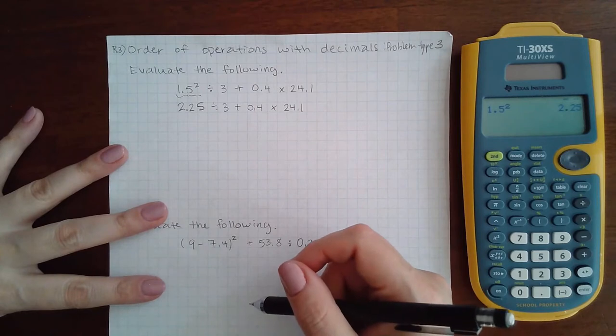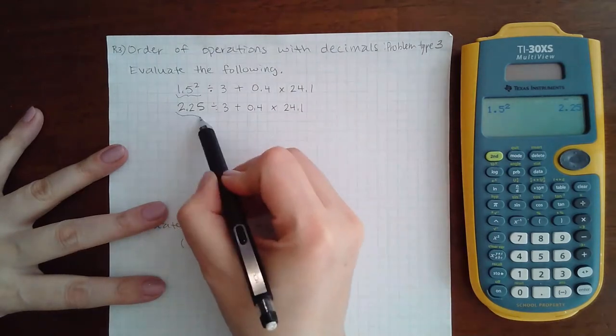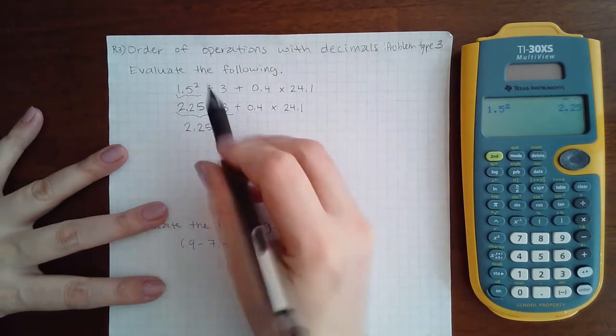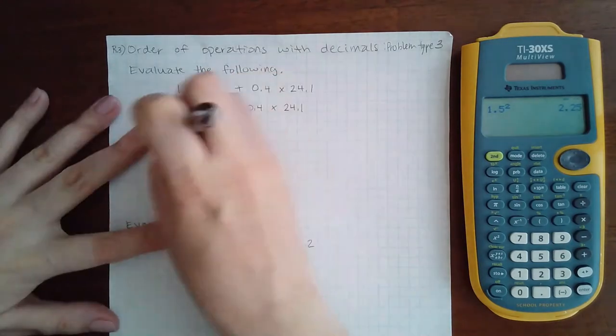Then the next thing I need to do is multiply and divide from left to right, one at a time. This is the first one I see as I scan from left to right.